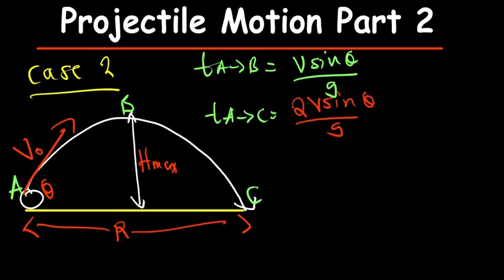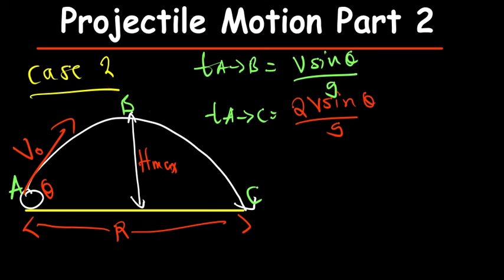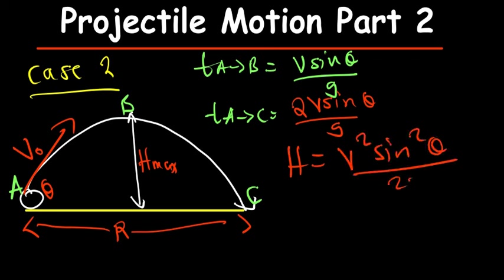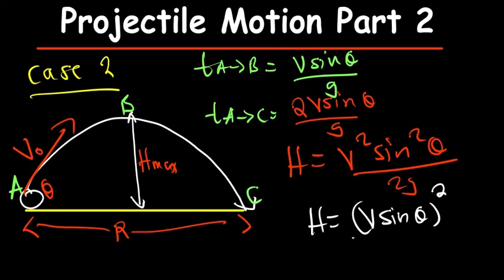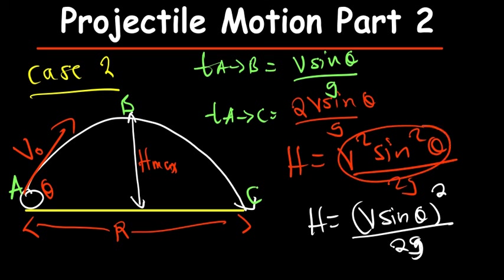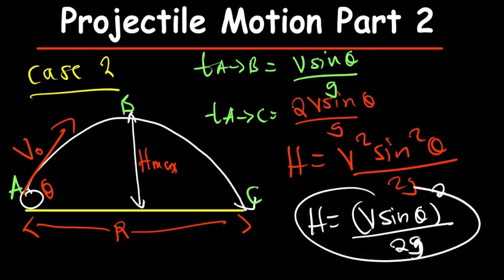These are the things we were doing yesterday — it's just a recap. To find h in this case, h is given by v²sin²θ divided by 2g. Or you can find h by computing v·sinθ in brackets, squaring the answer, then dividing by 2g. That way is easier because you just find v·sinθ first, square the answer, then divide by 2g.